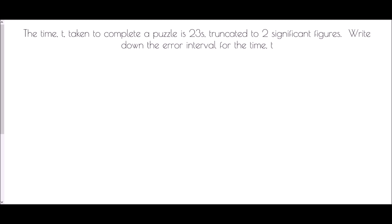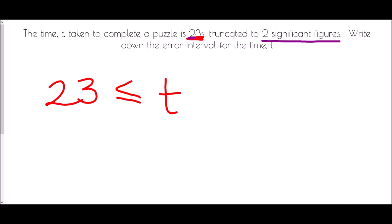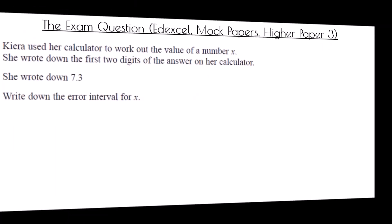Finally, the time t taken to complete a puzzle is 23 seconds truncated to two significant figures — write down the error interval for t. The absolute minimum is the value it has been truncated to, so 23 is the lowest possible value. We have two significant figures, meaning it was truncated after that point. The next value along from 23 would be 24, but it does not include 24 because if it had been 24 when we truncated it we would have ended up with 24. So the error interval is 23 ≤ t < 24.